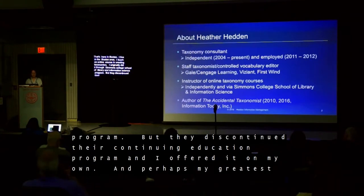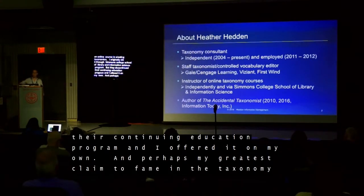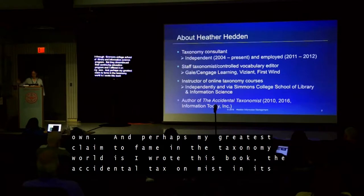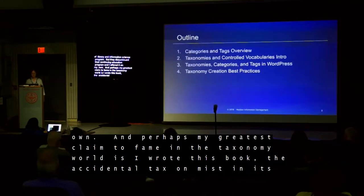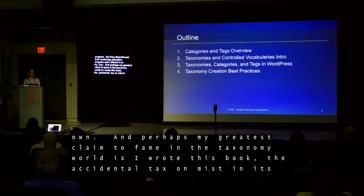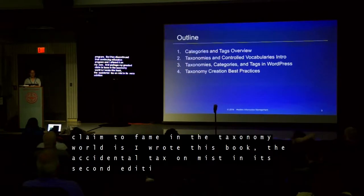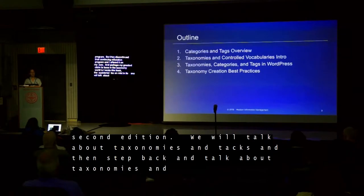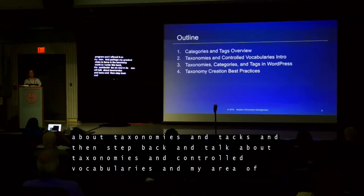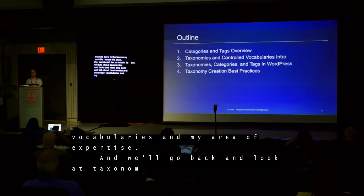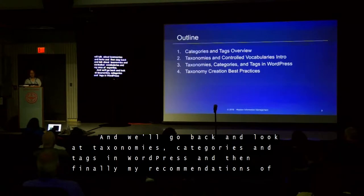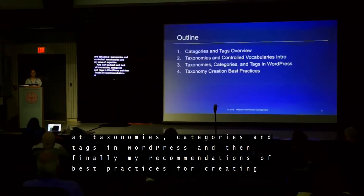Perhaps my greatest claim to fame in the taxonomy world is that I wrote this book, The Accidental Taxonomist, which is already in its second edition. So let's get started. This is my outline. We'll talk just a little bit about categories and tags at the beginning, since we all have some familiarity with that. Then I'm going to step back and talk more about taxonomies and controlled vocabularies — what they are, my area of expertise. Then we'll go back and look at taxonomies, categories, and tags in WordPress. And finally, my recommendations of best practices for creating taxonomies.